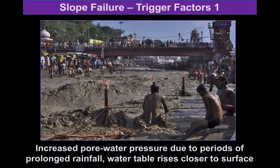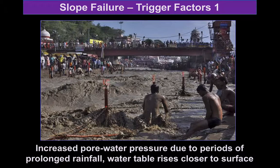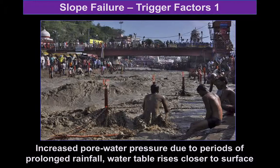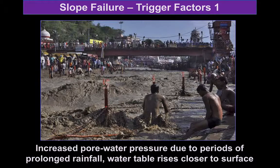So if we think about the things that actually trigger these mass movements — we've mentioned already water. Pore water pressure, perhaps as a result of prolonged rainfall leading to a rise in the water table, can reduce the cohesion of a slope. There's a very strong link between rainfall amounts and landslide hazards.